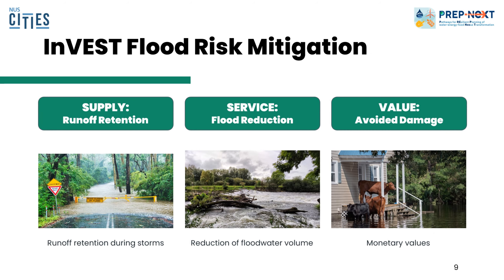Let's take a look at the flood risk mitigation model first. The first step is to look at the supply — in this case, supply refers to the ecosystem service, which is the provision of filtration and runoff retention. The second component of the model is the reduction of flood water volume in flood prone areas. Finally, value represents the avoided flood damage, which can be calculated optionally.